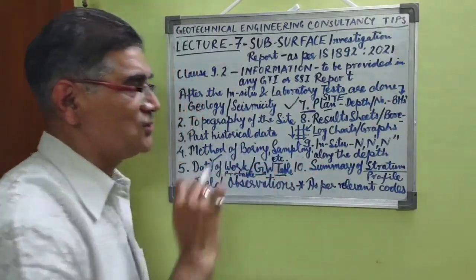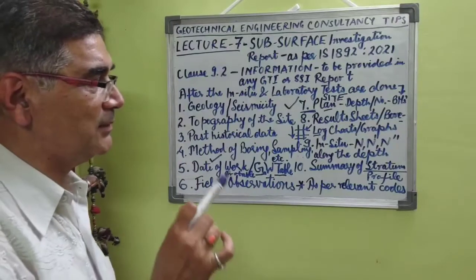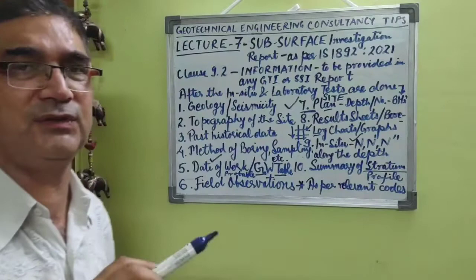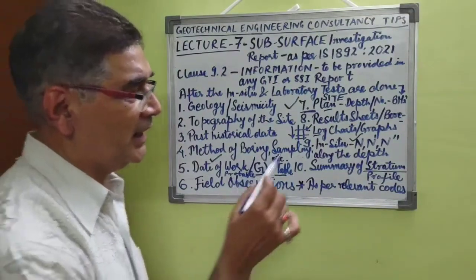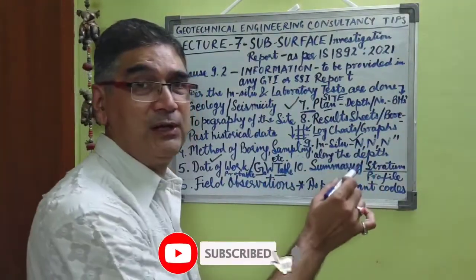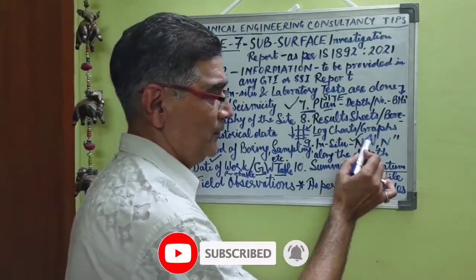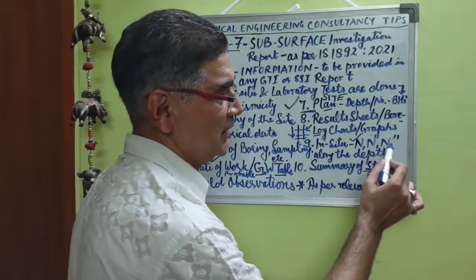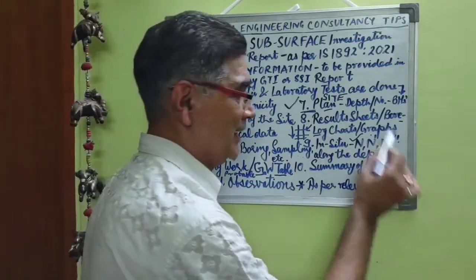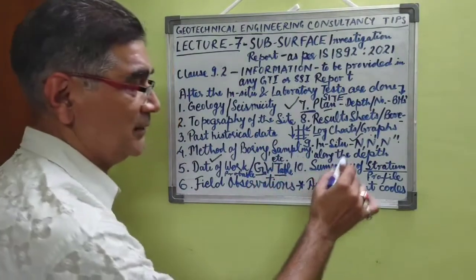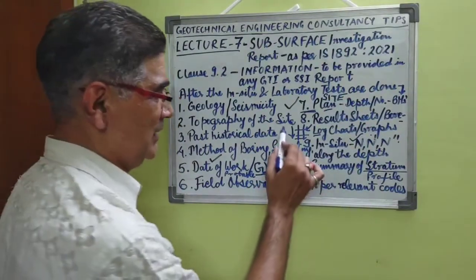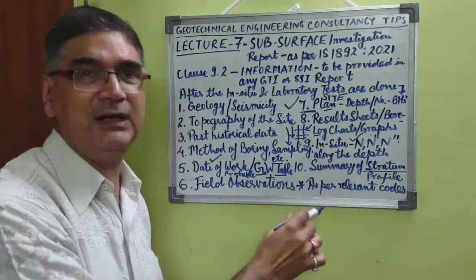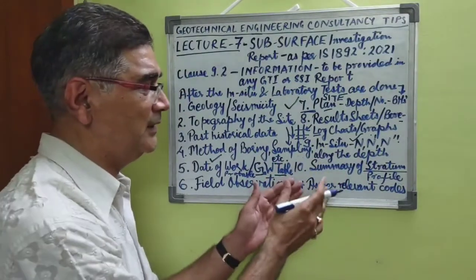Point nine is also very important: the standard penetration test values depicted as N are the in-situ test values performed at the site, and N' (N-dash) means standard penetration test values corrected for dilatancy, plotted vertically along the depth. These should be depicted in graphical form and included in the report.